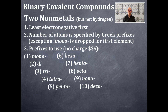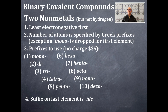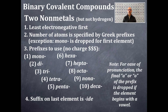Mono, di, tri, tetra, penta, hexa, hepta, octa, nona, deca. A quick note: there will be a suffix on the last element, and that suffix will be -ide. There's a little spelling issue — for simplicity and pronunciation, if there is an 'a' or an 'o' at the end of a prefix, that will be dropped if the element begins with a vowel. I'll go over that in just a second.